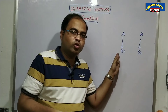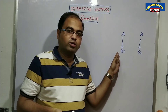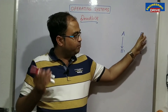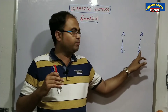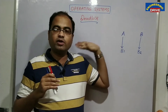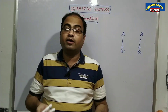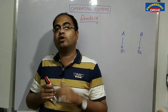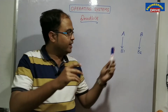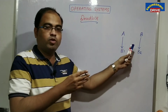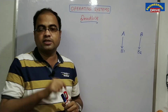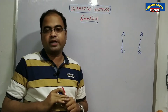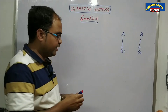If A is ready to give B1, then it will be easily given to B. Similarly, if B is ready to give B2, then B2 will be easily given to A. But they are not ready — if they are not ready, then only deadlock will occur. Now the same example I will take with our operating systems, so your doubt will be cleared.